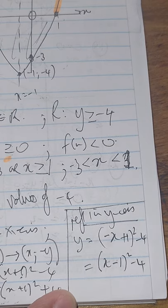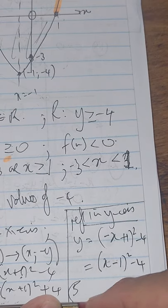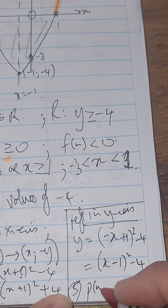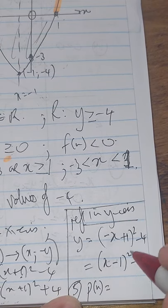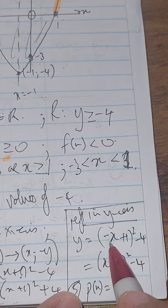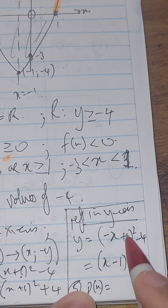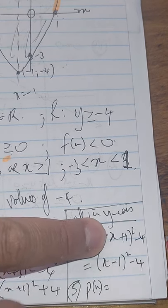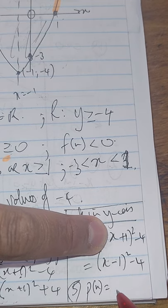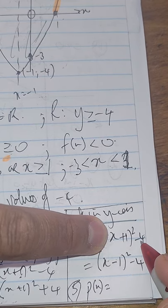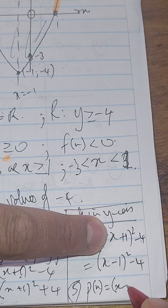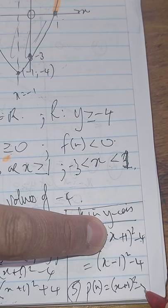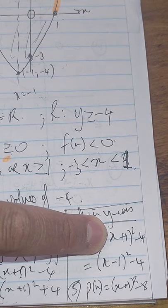And then the last question is for number 5, for p of x, if it's going to be f of x minus 4. So remember, this is your f of x. So what must I do? I'm going to subtract 4. So if I subtract 4 from this, it will become x plus 1 squared minus 8.